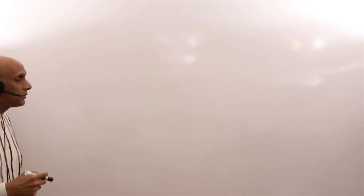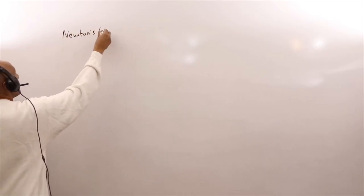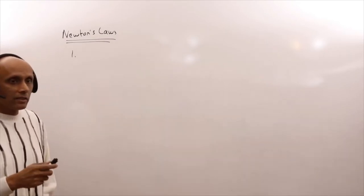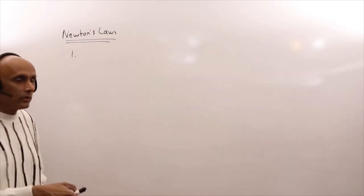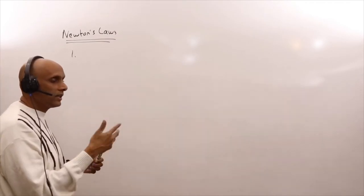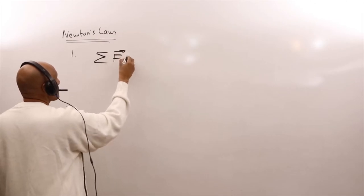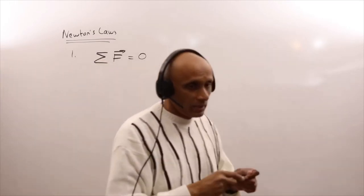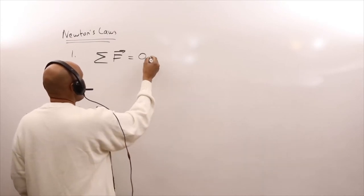Let's write Newton's laws in simplified form. The first law basically says that if there are several forces acting on an object and the net total force on that object is zero, then the object stays at a constant velocity. This is a statement of the sum of all forces acting on an object: if it's equal to zero, velocity remains constant.